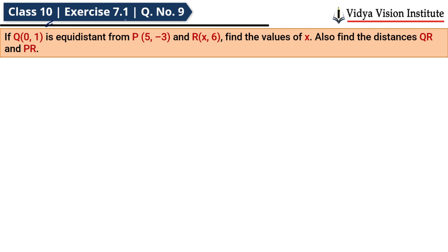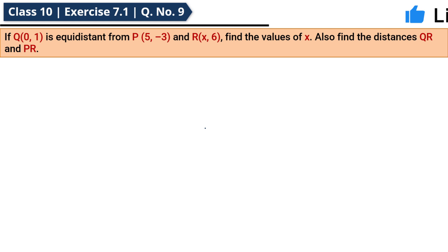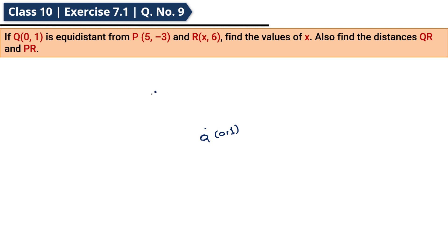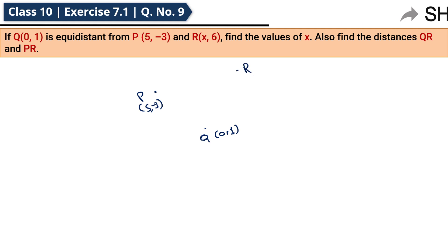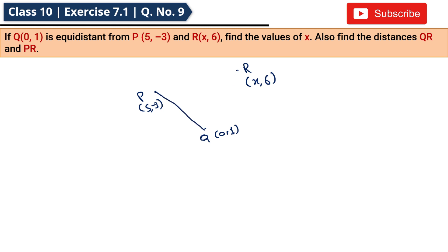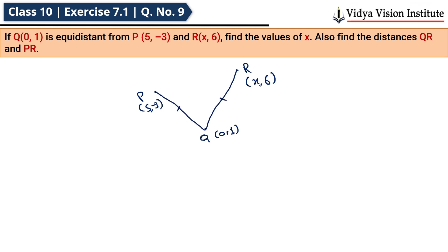Chalo solve karte hain Class 10th Exercise 7.1, Question No. 9: If Q(0,1) is equidistant from P and R, find the values of x, also find the distance QR and PR. Yahan par Q ke coordinates hain (0,1), ek point P(5,3) aur ek point R(x,6).